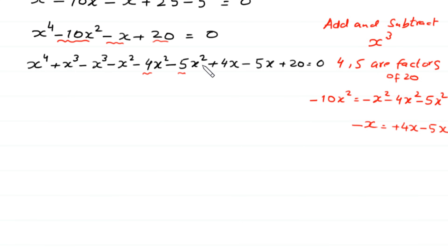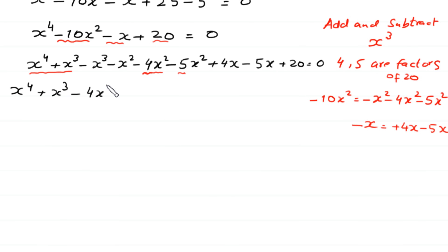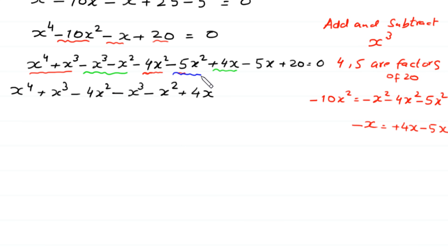We make three groups of this expression with three terms in each group. First group: x to the power 4 plus x cubed minus 4x squared. Second group: negative x cubed minus x squared plus 4x. Third group: negative 5x squared minus 5x plus 20, all equal to 0.